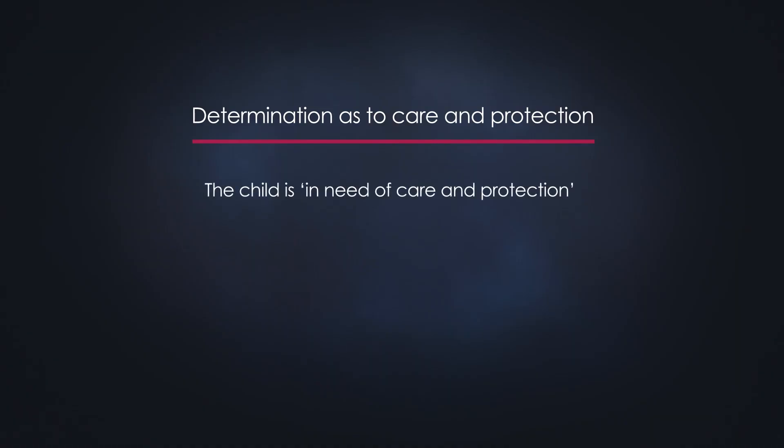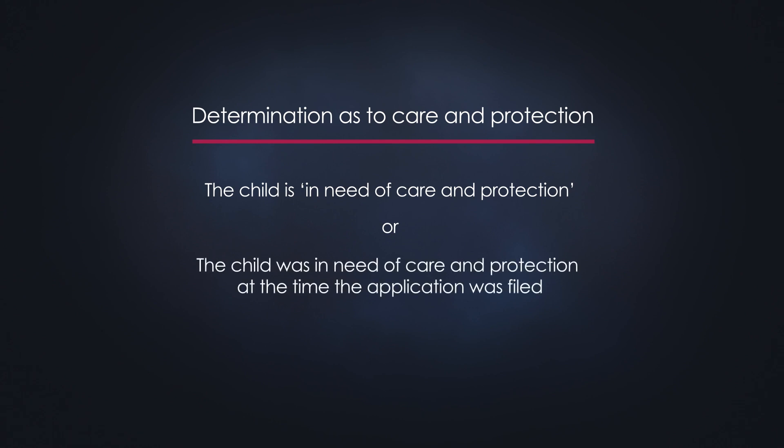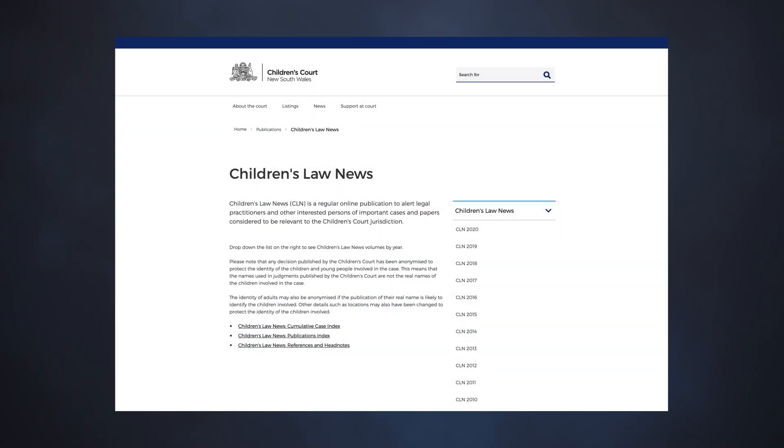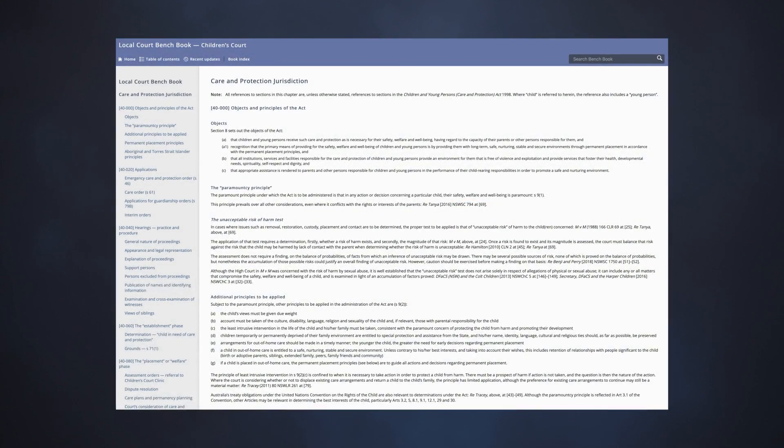We're now going to look at Section 72, which covers determinations as to care and protection. The reason this stage is often referred to as the threshold issue or test is because Section 72 states that the court can only go on to make a care order when satisfied that either the child is in need of care and protection, or the child was in need of care and protection at the time the care application was filed. The court puts aside the interim arrangements in deciding whether the child is in need of care and protection. So in summary, the court must be satisfied that Sections 71 and 72 are met before they can make a care order. You should be familiar with the cases of Re Irene and Re Alastair, and there are great resources on the Children's Law News website and the Care and Protection Bench Book.